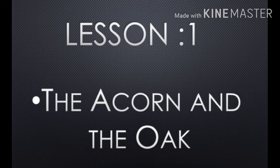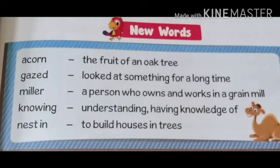Do you know what 'acorn' means? Who knows? Acorn means the fruit of an Oak. So the name of the lesson is The Acorn and the Oak. Let's go through the new words of this lesson. First word is 'acorn' — acorn is the fruit of an Oak tree. It's a fruit.